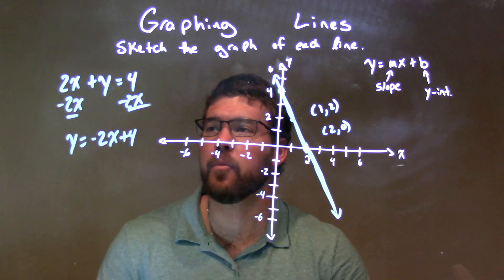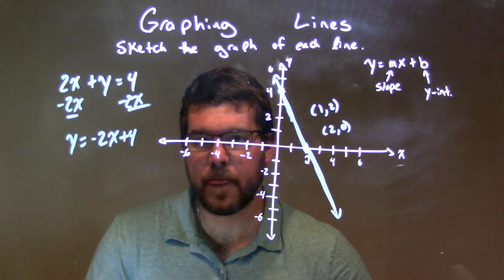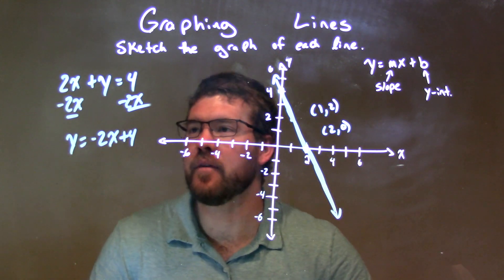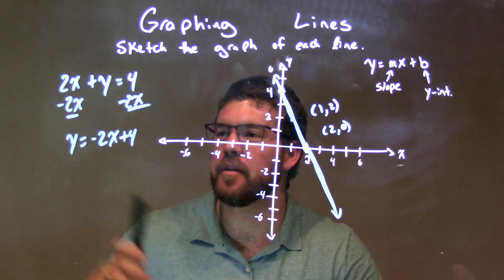So quick recap. We're given 2x plus y equals 4, and I need to graph that. So I like to get it in slope-intercept form. I subtract the 2x from both sides to get y by itself.